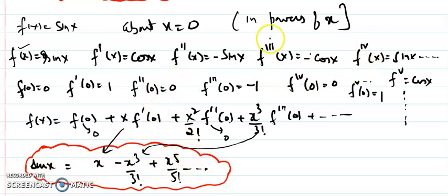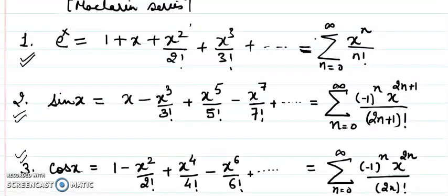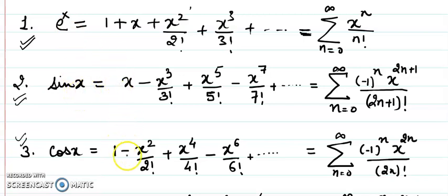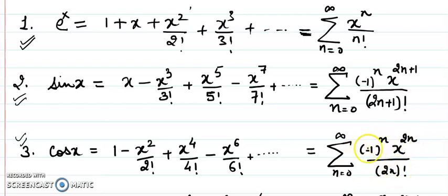Similarly we can derive the formula for cos x. The cosine formula uses even powers: cos x equals 1 minus x squared over 2 factorial plus x to the 4 over 4 factorial minus x to the 6 over 6 factorial, and so on. In summation form, sin x uses odd powers with alternating sign: minus 1 to the n times x to the power (2n+1) over (2n+1) factorial. Cosine uses even powers: minus 1 to the n times x to the power 2n over (2n) factorial.